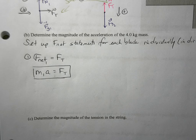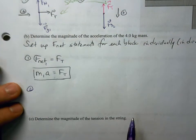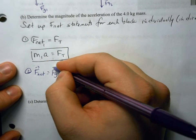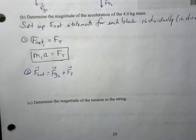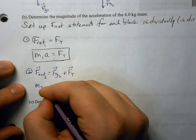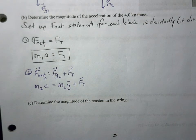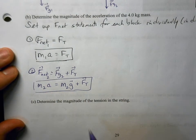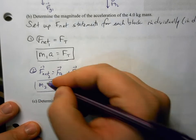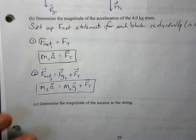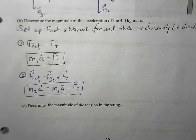That equation doesn't do much on its own — I don't know acceleration and I don't know FT, so I have one equation and two unknowns. I need a second equation. For the second block, the net force is the force of gravity FG2 acting down, and the force of tension acting against the direction of motion, giving us M2·A = M2·G - FT. We don't want FT to remain in our answer, so what we want to do is combine both of these equations together.